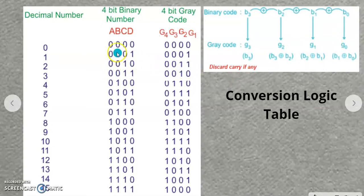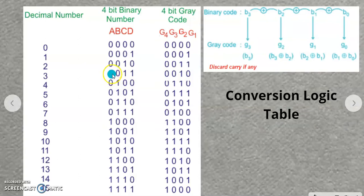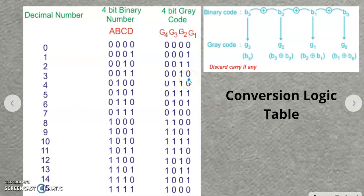Let's take the example of decimal 3, which is 0011 in binary. First, copy the MSB bit 0 as it is into grey code. Then add 0 and 0 — that gives 0. Next, add 0 with 1 — that gives 1. Finally, add 1 with 1 — the result is 0 with carry 1; the carry is ignored. So the grey code equivalent for 0011 is 0010. Similarly, we apply this for all digits to complete the conversion logic table.